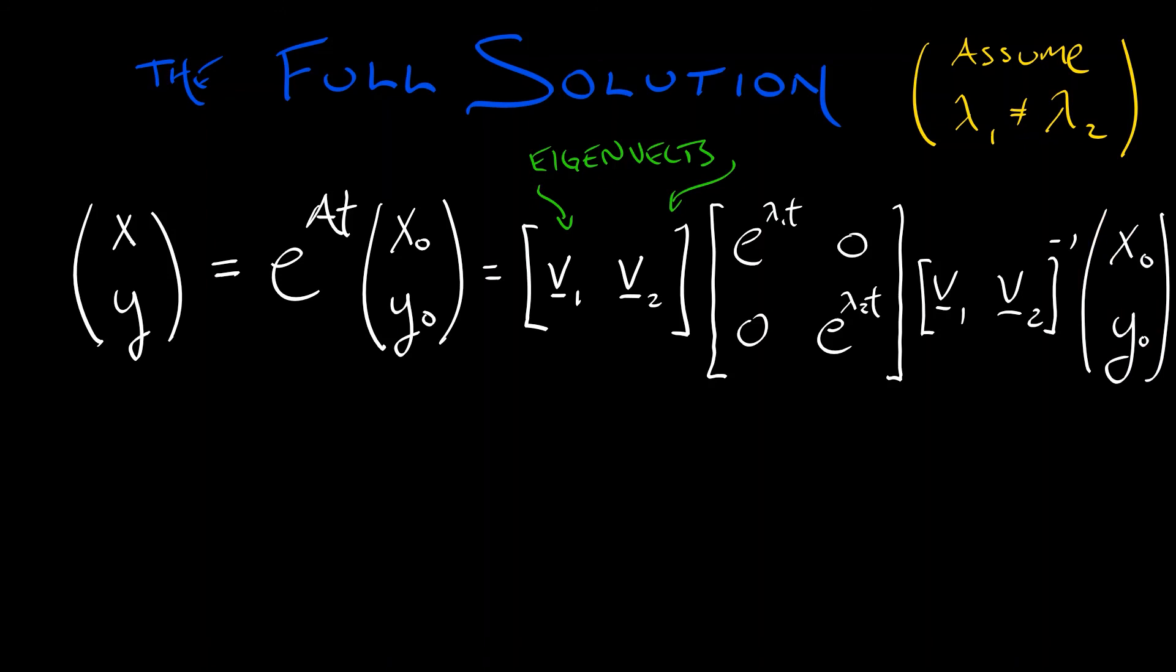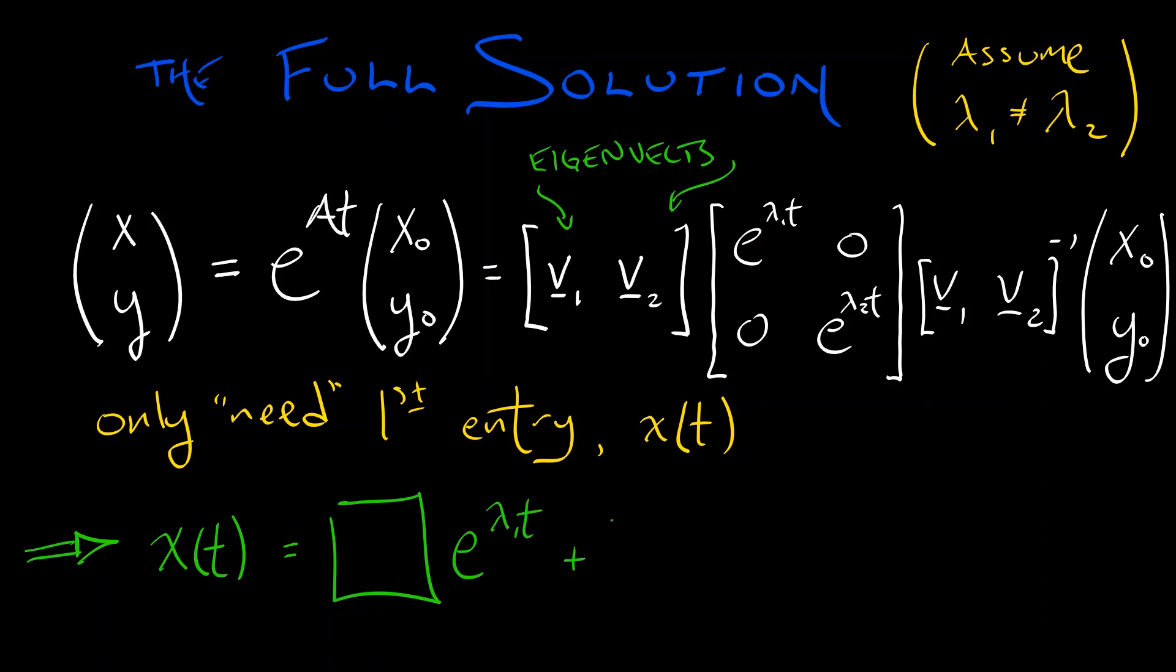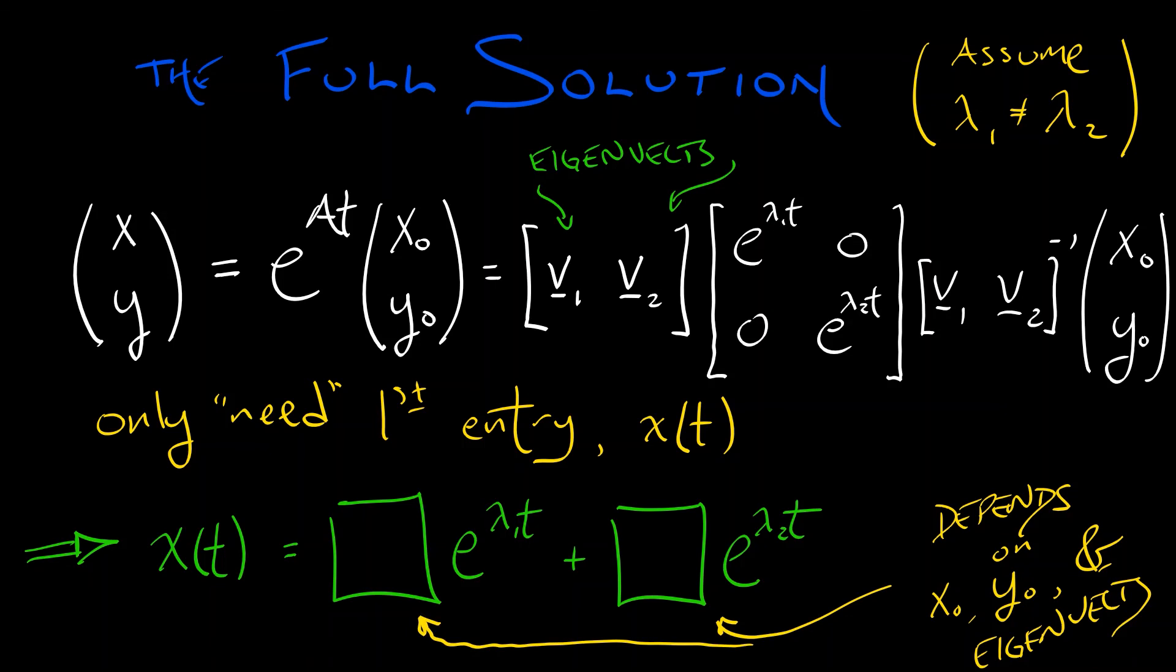Now that's a big mess. And really, we only need the first entry x of t. That's the solution that we care about. So if I take this vector equation and just read off the first row, what do I get? Well, there's a whole bunch of algebra that goes on. And in the end, you're going to get some constant times e to the lambda 1 t plus some other constant times e to the lambda 2 t. This is the linear combination of basis solutions. Now these constants out front depend on the initial conditions x naught and y naught. They depend on the particulars of the eigenvectors that you have chosen. But in the end, this all matches up the perspective of basis solutions.